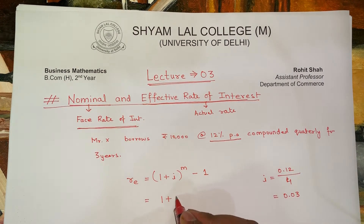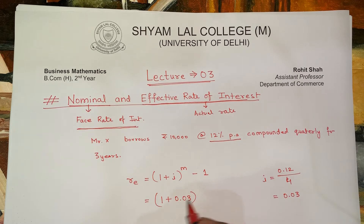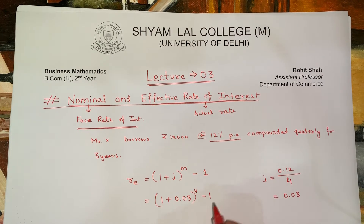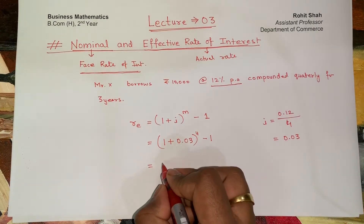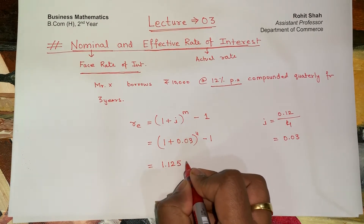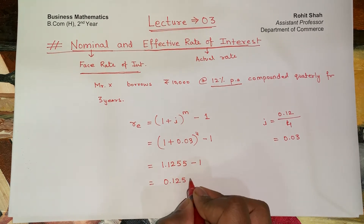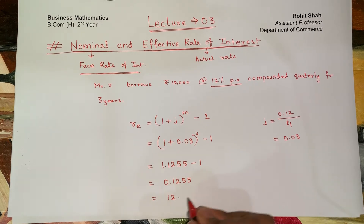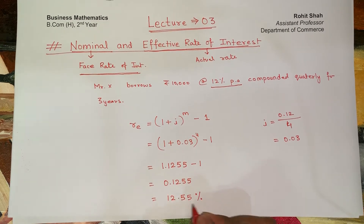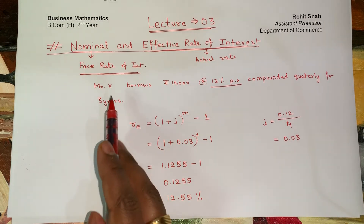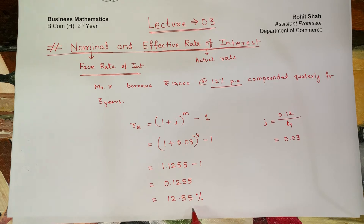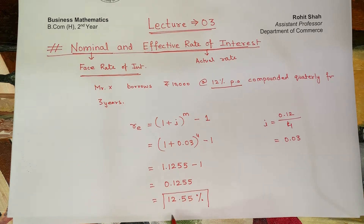So this becomes (1 + 0.03)^4 − 1, which equals 1.1255 − 1 = 0.1255, or 12.55%. This means that in reality Mr. X ends up paying 12.55%. This is termed as the effective rate of interest — the actual rate that the borrower ends up paying.